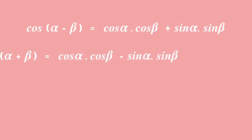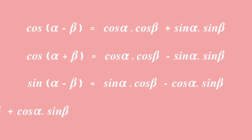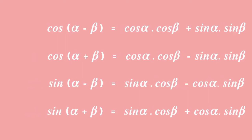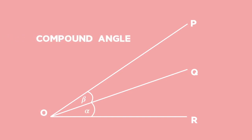Here are the formulae you will use when working with compound angles. We will get into more detail of how and when to use each formula as the lessons progress. When two different angles are added or subtracted from one another to form another angle, the new angle is called a compound angle.